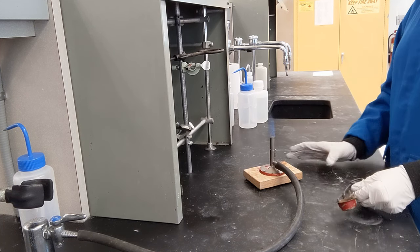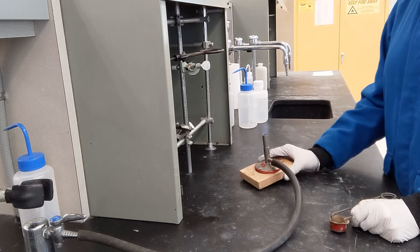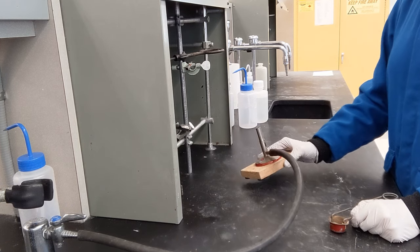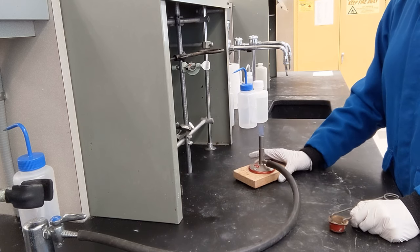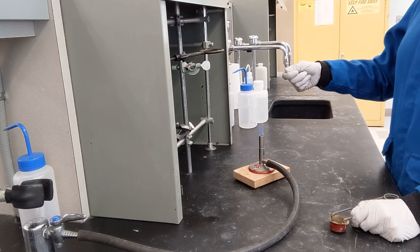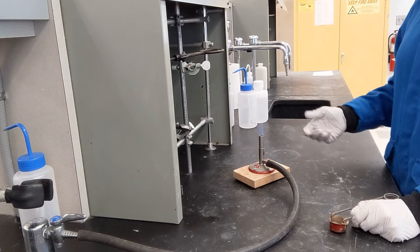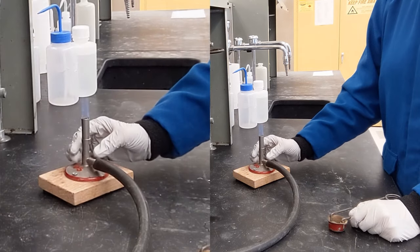So you can hold the base of the Bunsen burner and manipulate it around to heat something. Or if you want, you can hold tongs with something over the top. Make sure you keep the flame away from yourself.